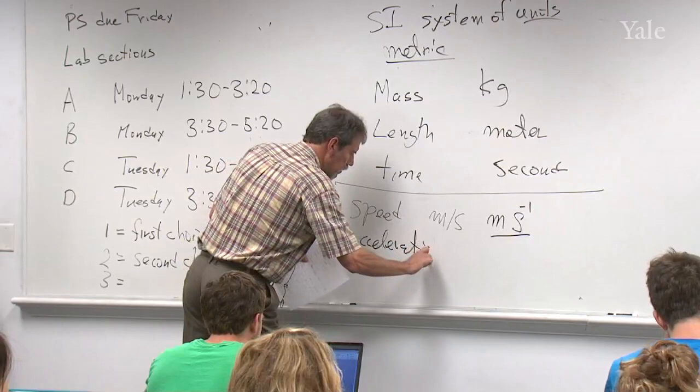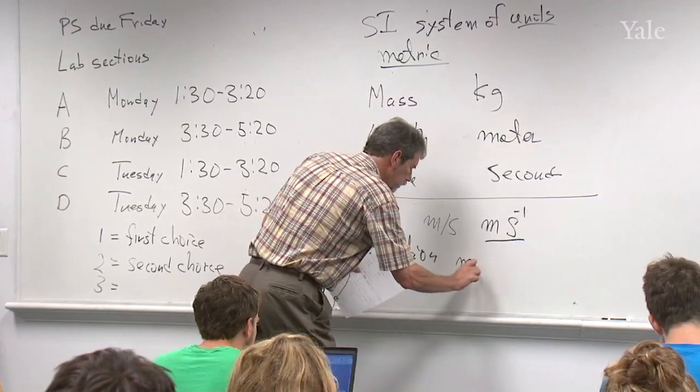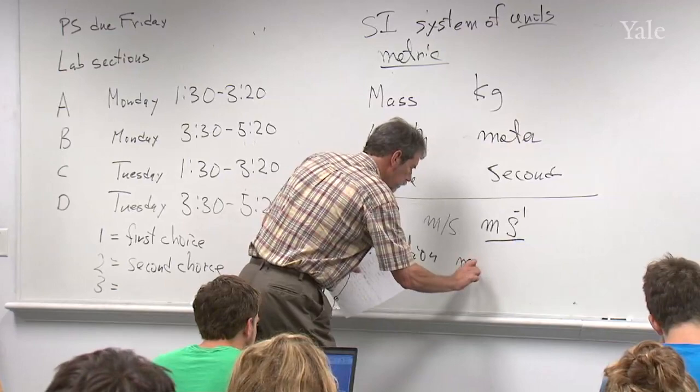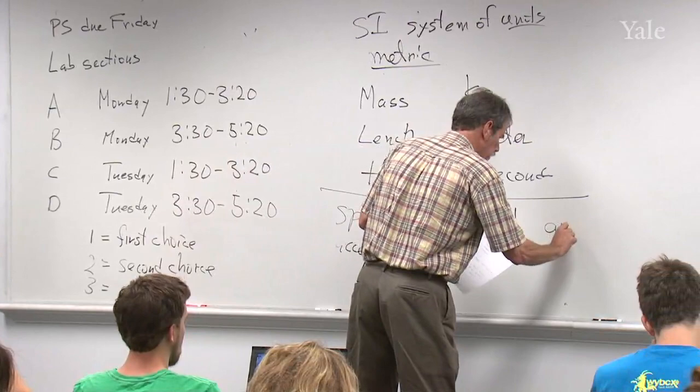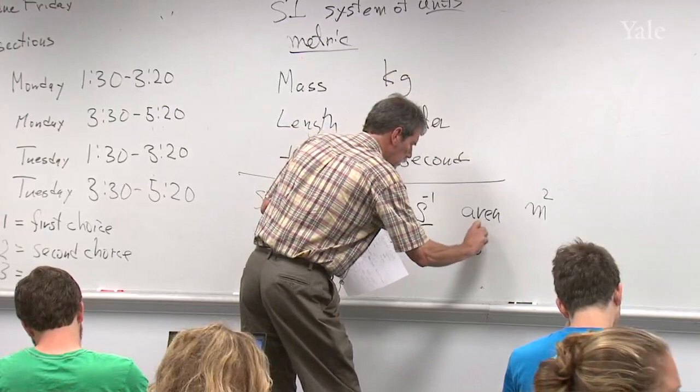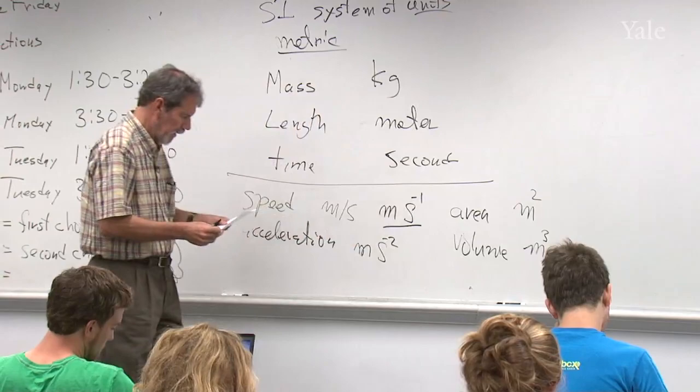Acceleration is meters per second per second, written as m·s⁻². It's how fast the speed is changing. Area would be meters squared, and volume would be meters cubed.